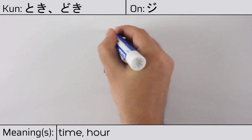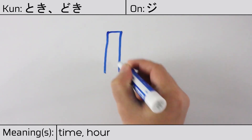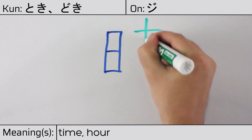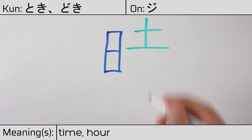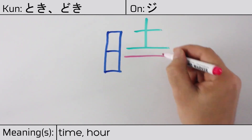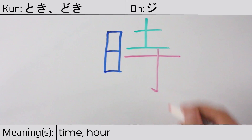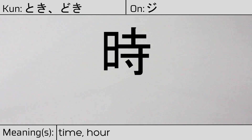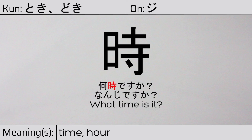The radicals are: san or day on the left, hihen; the kanji meaning earth; and finally the radical sun meaning inch. The right hand side of the character means temple. You can remember this kanji by the following hint: the time of the day, announced by the temple bell. Our example sentence is: Nanji desu ka? — What time is it?